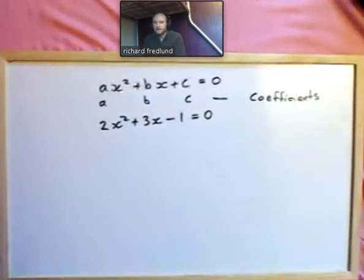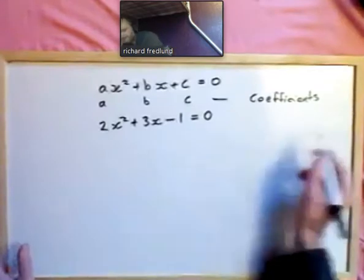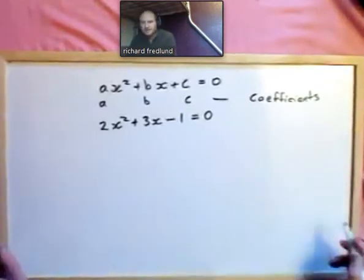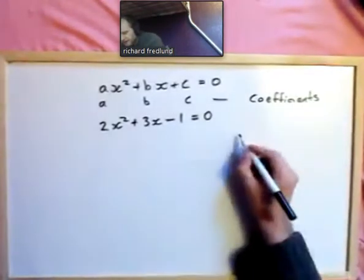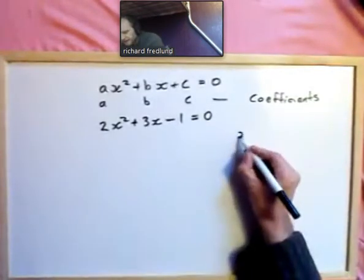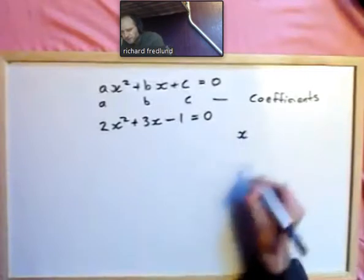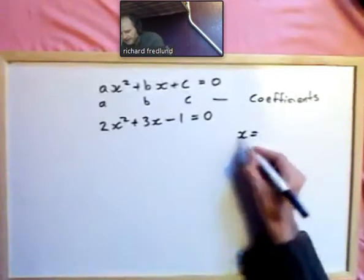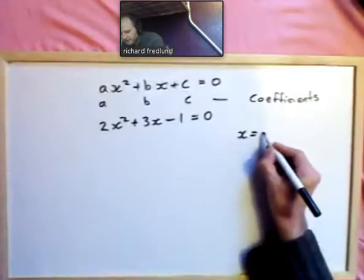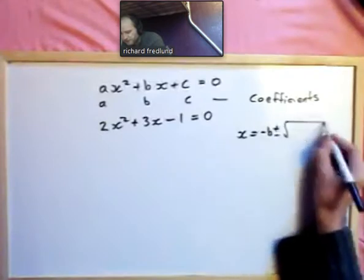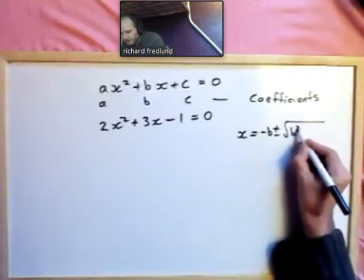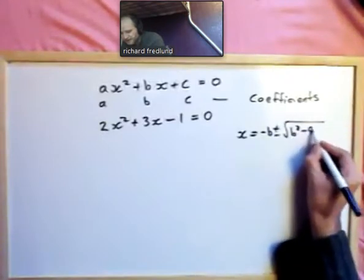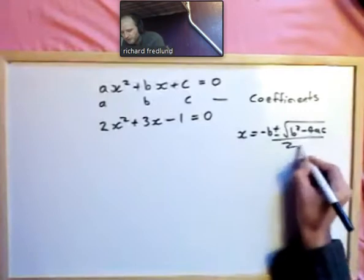There's a well-known formula written in terms of the coefficients, which I memorised at school: x equals minus b plus or minus the square root of b squared minus 4ac, all over 2a.